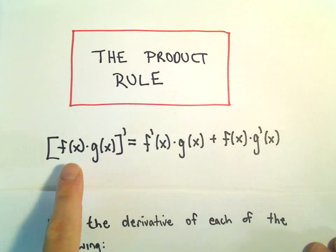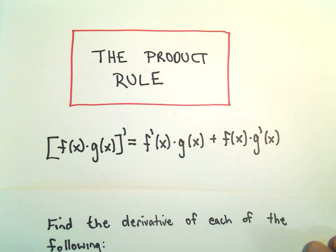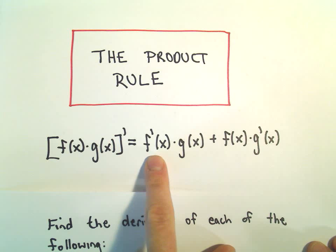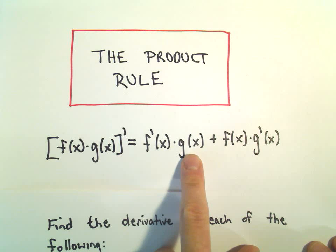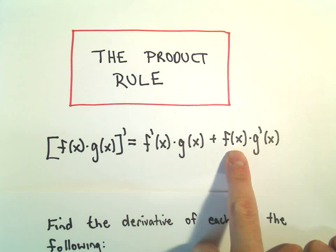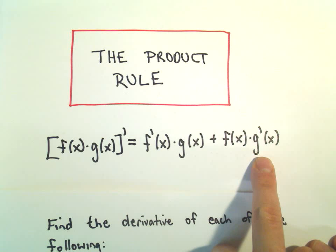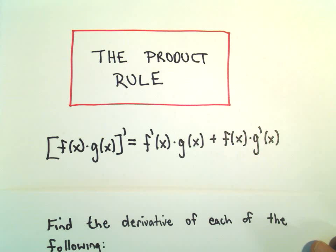The product rule says if you have a function times another function and we want to take the derivative, what we do is we take the derivative of one of the functions, multiply it by the original of the other, then we stick a plus sign in there, and then the function we took the derivative of the first time we leave it alone, and then we take the derivative of the other function.